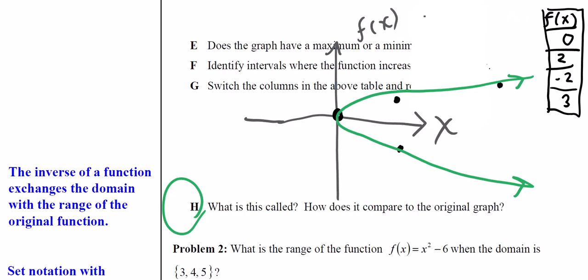We're switching the x with the y. We're switching the x with the f of x. We're switching the input with the output. We're switching the domain with the range. And so what we get is we get the same exact graph, except it's on its side.